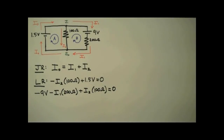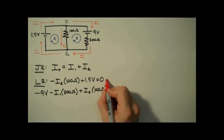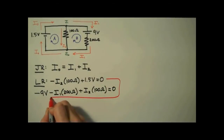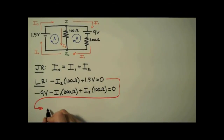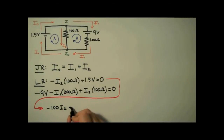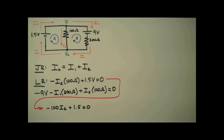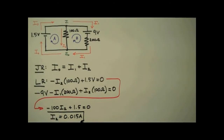All that's left is some algebra. We have three equations, three unknowns — we can solve this. I'm going to start with the middle equation and solve for I2. I'm going to drop the units; when using Kirchhoff's rules it makes the equations much easier to handle, especially when they get really complex. I2 is equal to 0.015 amps, or 15 milliamps.